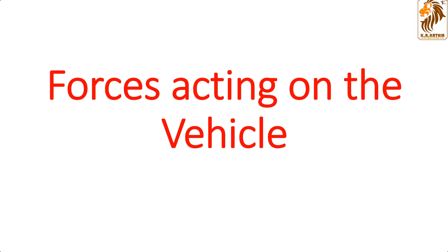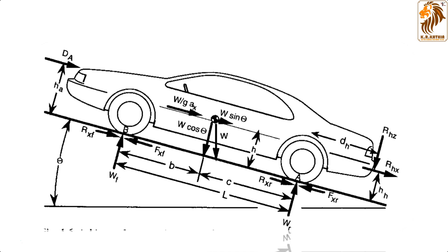Let's see what the next diagram is trying to explain to us. This is a vehicle which is resting on a slope — you can see it is having a slope of theta degrees and the vehicle is currently at a resting condition. Here we can see that different kinds of forces are acting, and this is the complete summation of the forces acting on the vehicle.